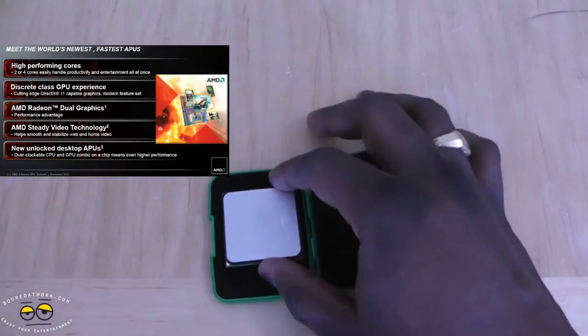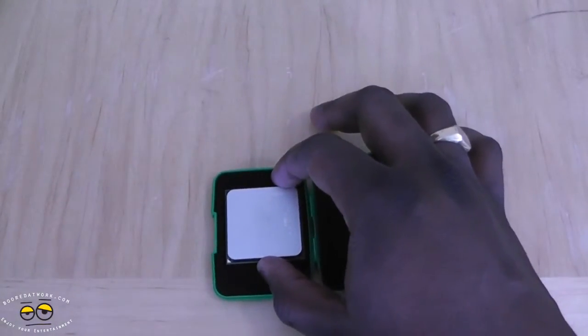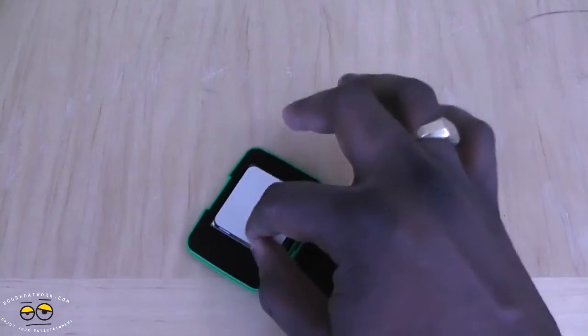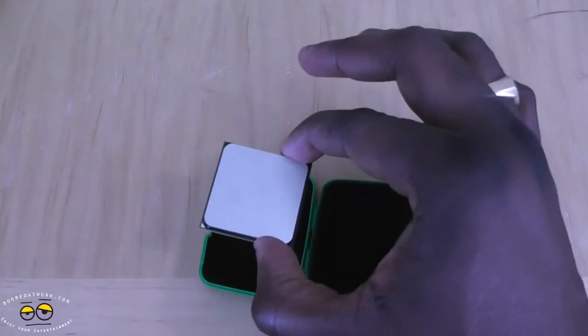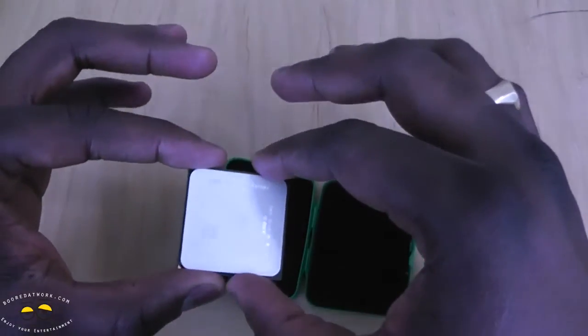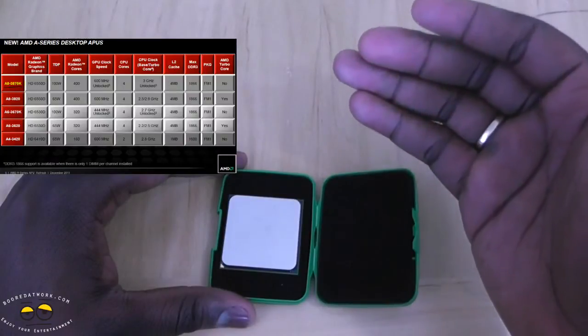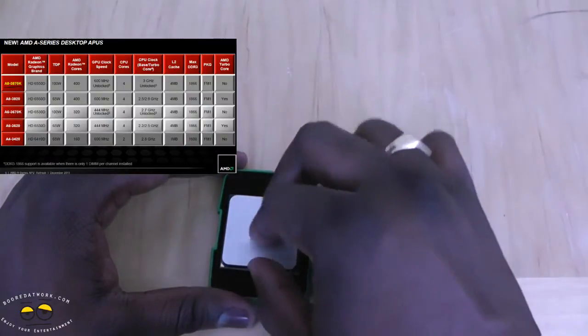So this APU actually has a HD 6550 graphics card built into this chip here as well as a quad core. This is also a quad core AMD processor and you can run a crossfire with a 6 series graphics card with this also.